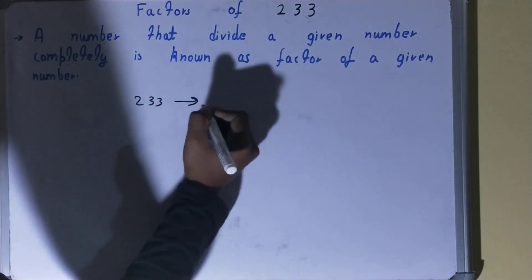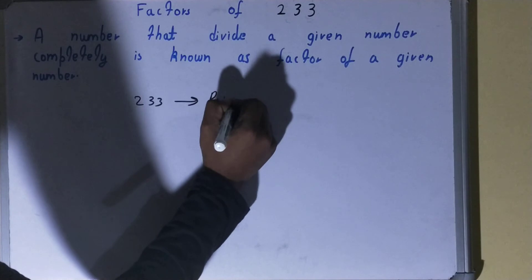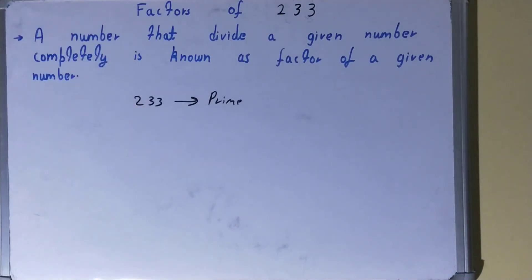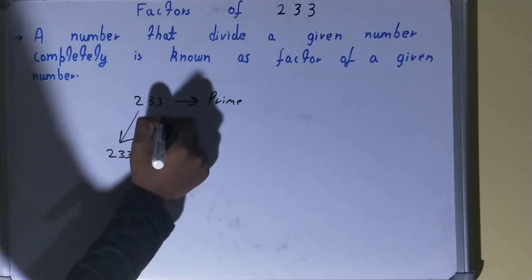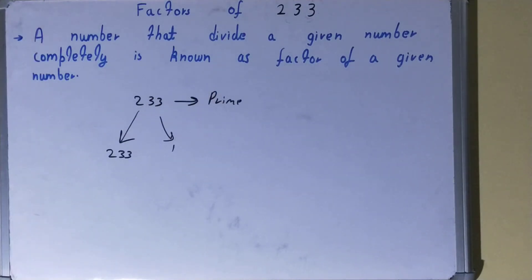If we talk about the number 233, it is a prime number. Prime numbers have a specialty that they are divisible by themselves and one only. Because the number 233 is a prime number, it also has that specialty that it is divisible by itself and one, and no other number can divide this 233.